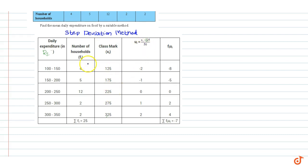Class size is 50, that is the difference between the upper and lower values of daily expenditures in the ith interval. We calculate ui using the formula xi minus 225 divided by 50.